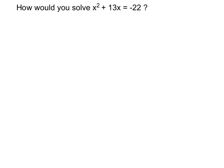So what we're going to want to do is rewrite that as equal to zero. So on both sides of the equation, I'm going to add 22, which gives me x squared plus 13x plus 22 equals zero.